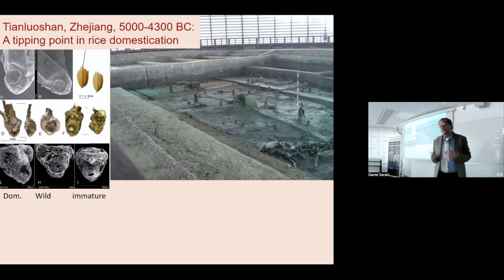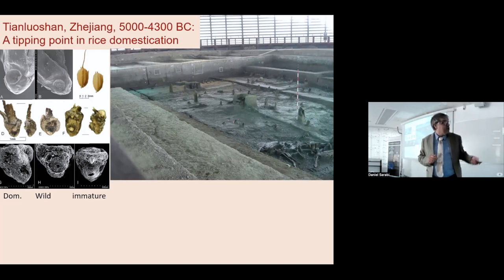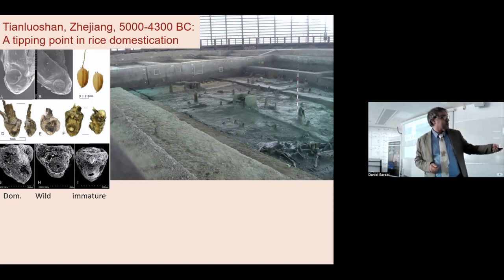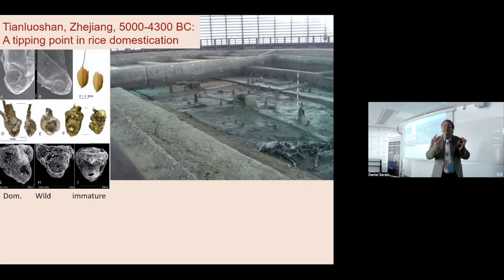They usually just assumed it was wild. We thought we should find the attachment scar and ask — is it a smooth dehiscent type with that round scar? That's a modern one, that's a waterlogged archaeological one from the site, and that's an SEM of a carbonized archaeological one. Or the domesticated type, which is ripped out because it doesn't shatter, so people have to thresh it and it tears. We also get a third category which I argued was probably immature green-harvested — harvested before it's ready to dehisce.